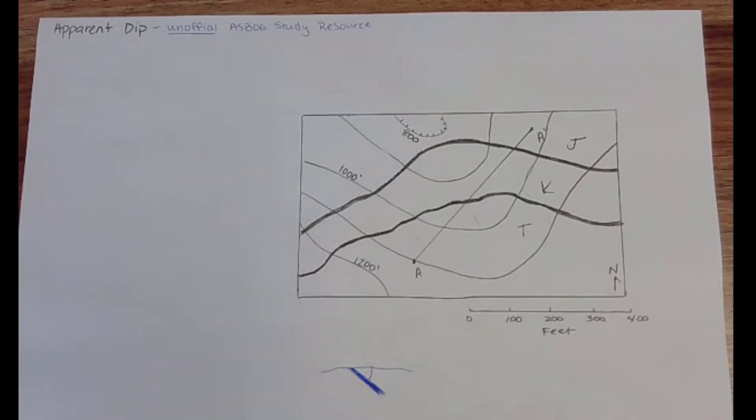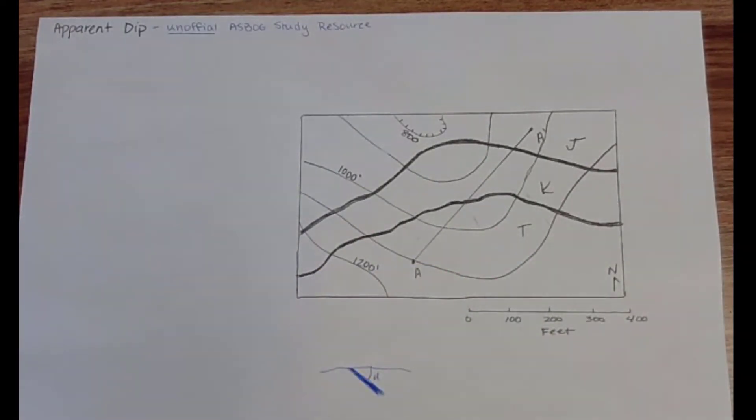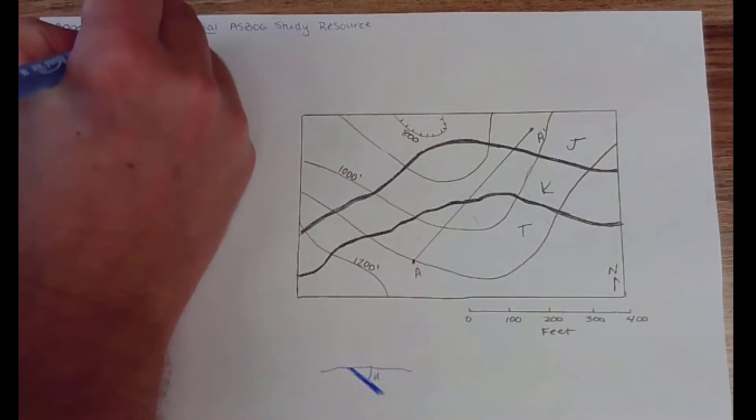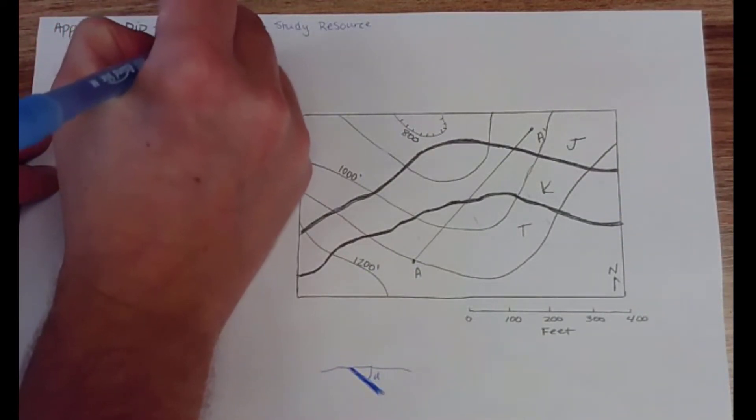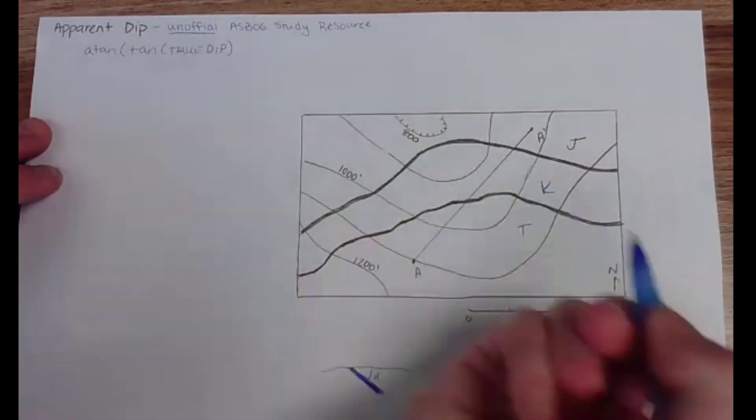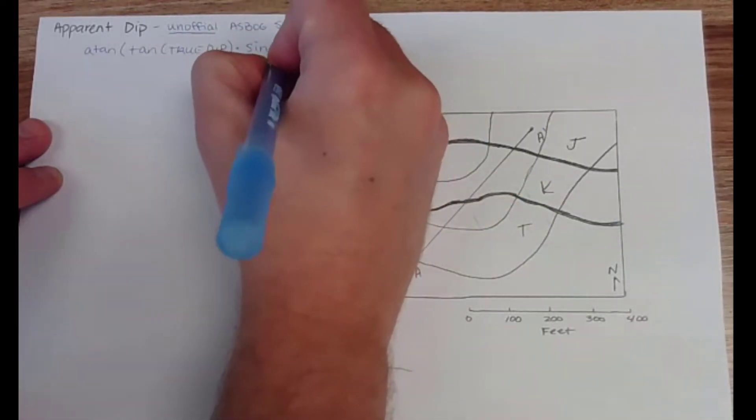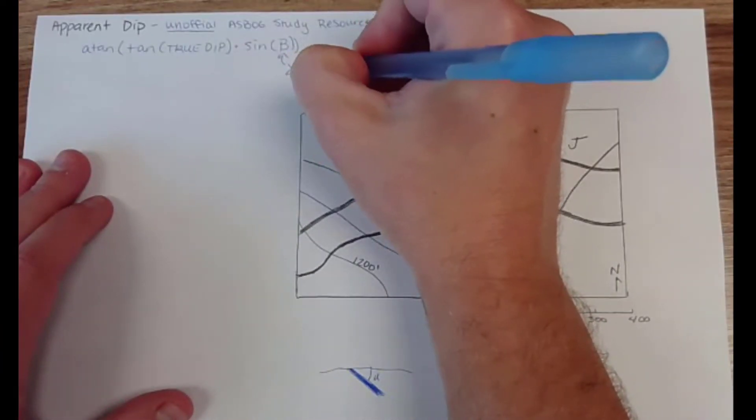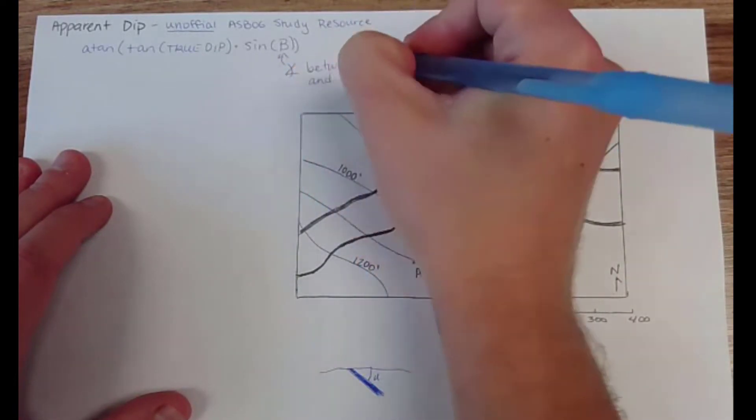So how would you, if you were given a problem like this, get your apparent dip? The first thing is you need to memorize the apparent dip formula. That's: take the arctan of the tangent of the true dip times the sine of beta. Beta is going to be the angle, and it's the acute angle, so the one smaller than 90, between strike and the cross-section line.